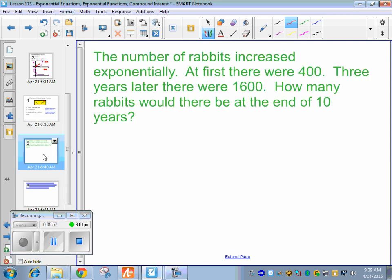So let's try a problem. The number of rabbits increased exponentially. At first, there were 400. Three years later, there were 1,600. How many rabbits would there be at the end of 10 years? You never want to do that last part until you find k. So start with this formula that we just wrote down. 400. At first, there were 400. Where do we put that number? Right there. A naught. Put in 400.